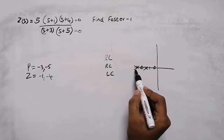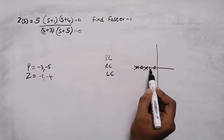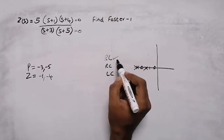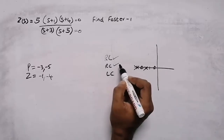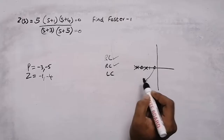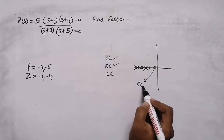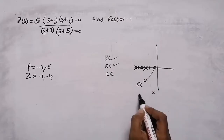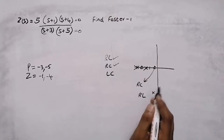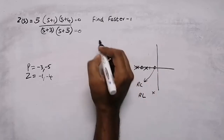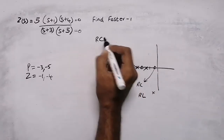If poles and zeros are lying on the negative real axis, it can be either RL or RC. If zero is at the beginning, then it is an RC circuit. If pole is at the beginning, then it will be an RL circuit. In this case, zero is at the beginning, so it is an RC circuit.